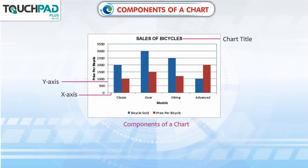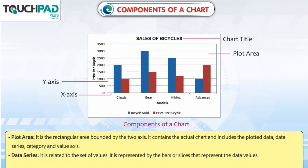Plot Area: It is the rectangular area bounded by the two axes. It contains the actual chart and includes the plotted data, data series, category and value axis.